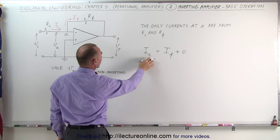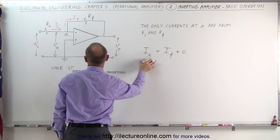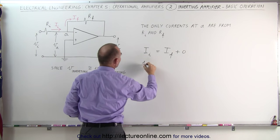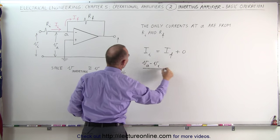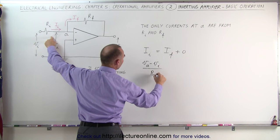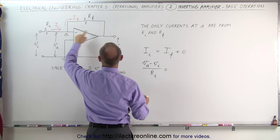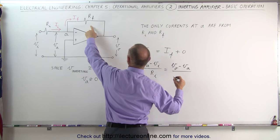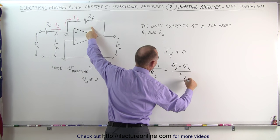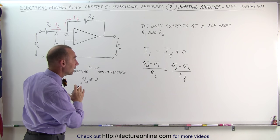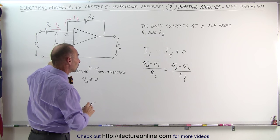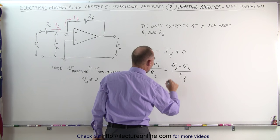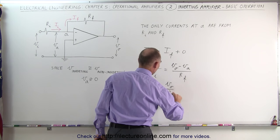Using Ohm's law — the current equals voltage divided by resistance — the voltage difference V sub A minus V sub I divided by R sub I must equal V sub O minus V sub A divided by R sub F. Remembering that V sub A equals zero because that's connected to ground, we can then say that minus V sub I divided by R sub I is equal to V sub O divided by R sub F.